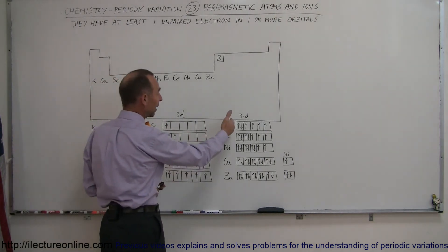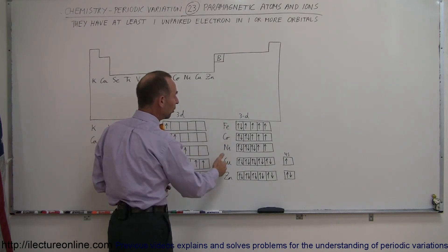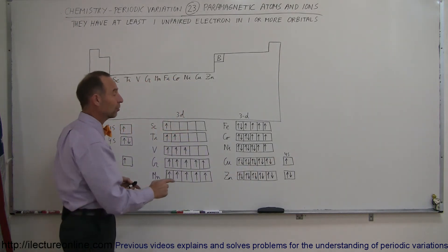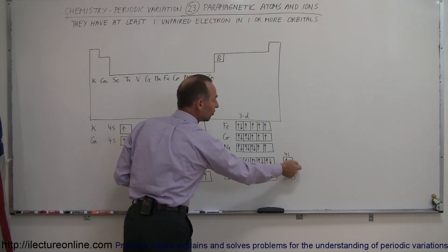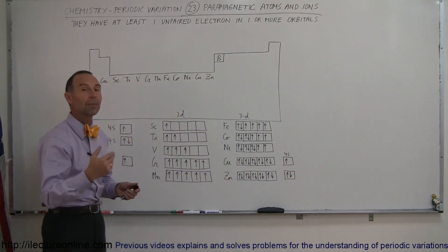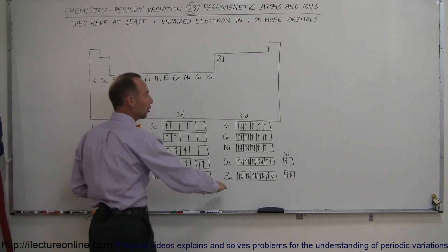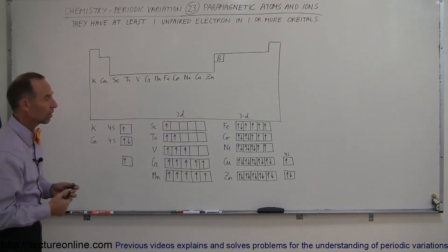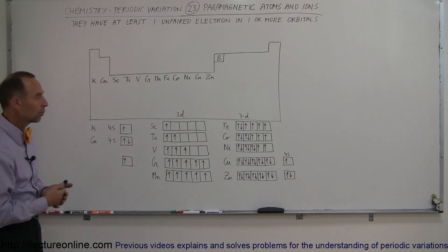Moving on to iron, cobalt, nickel, and copper — those four are also paramagnetic. Even though copper has all of its 3D orbitals filled, it turns out that it stole one of the electrons from the 4S orbital to do so, so the 4S is still not filled and therefore copper is slightly paramagnetic. But when we get to zinc, all of its 3D orbitals and its 4S orbital are filled, so there are no unpaired electrons and therefore no paramagnetism associated with zinc.